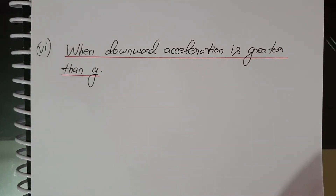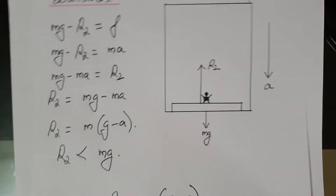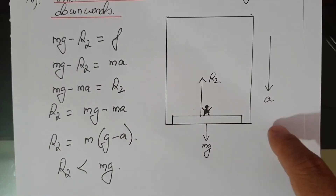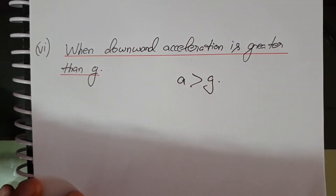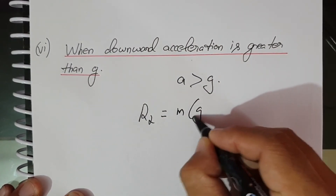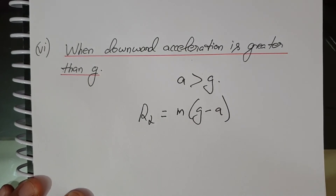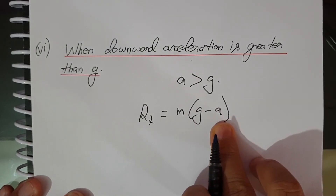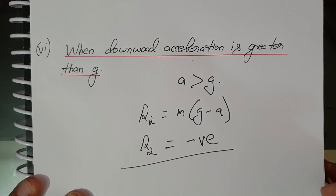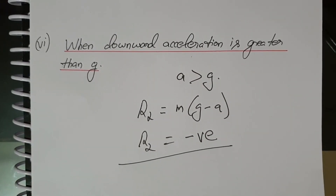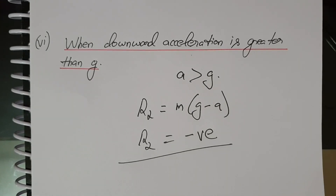When the downward acceleration is greater than g, using R2 equals M(g minus A), since A is greater than g, the value of R2 becomes negative. The apparent weight of the person becomes negative. In that event, the person will rise from the floor of the lift and stick to the ceiling, or we can say the person will start flying.